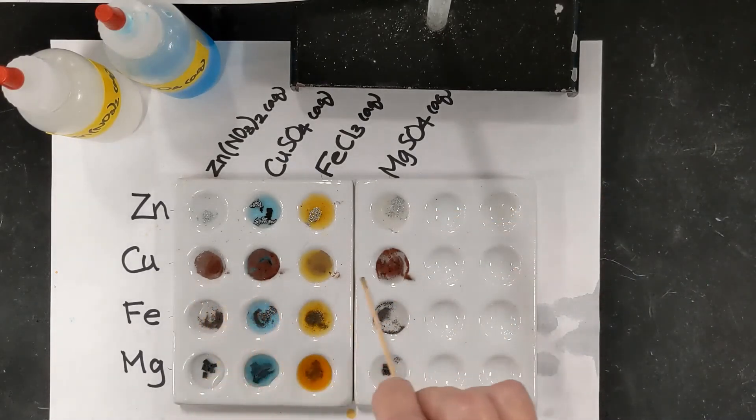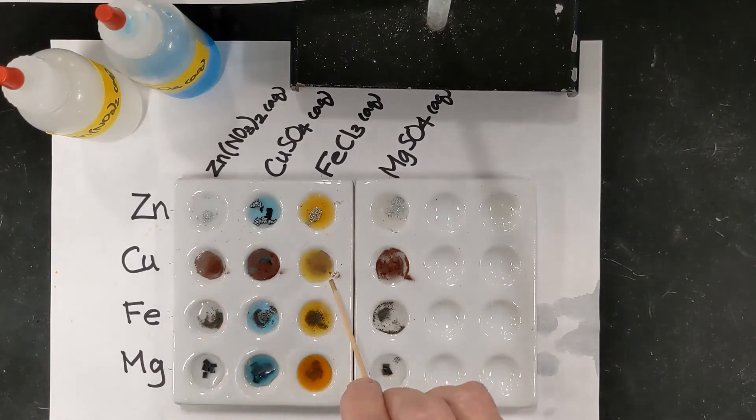On the copper row, I see essentially the unchanged orangey red color of the copper all the way across. So I would say that there are no reactions present in that row.